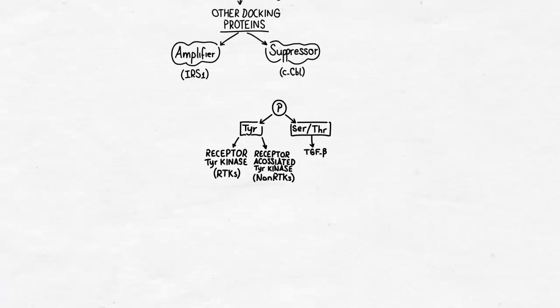Or in other cases, tyrosine kinases are separate enzymes closely associated to the receptor, and in these cases they are called receptor-associated tyrosine kinases, or non-RTKs. These are the two major classes of the catalytic receptors.